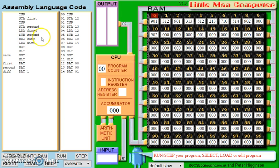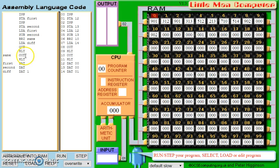Now, in this case, if that subtraction yields a result of zero, then using this identifier here — same — branch zero, same — we will then jump from line six in our code down to line 10. At that point, we will then output the result, which obviously will be zero. If our first was 10 and our second was 10, and we subtract second from first, then we're left with zero. So we get a zero in the output, and then the program would halt.